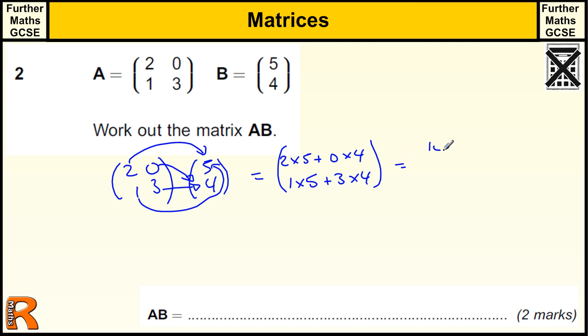If we work that out, we get 10 on the top. And then we get 5 plus 12, which is 17 on the bottom. Okay, and that's it.